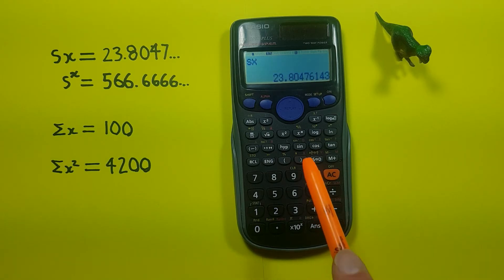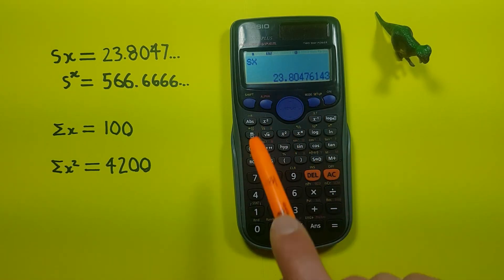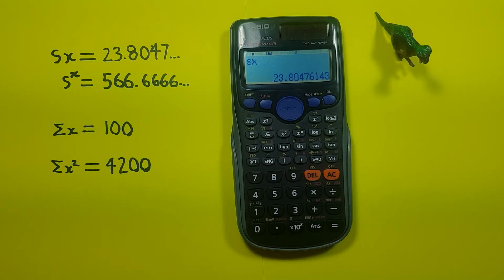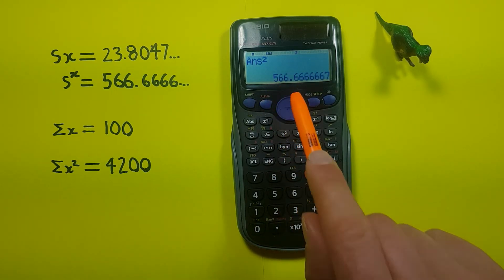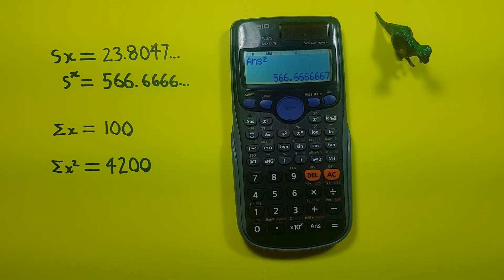So we press 4 and equals, and here we see we get 23.8047, etc. And again, we can get our sample variance by squaring this number and pressing equals, and we see we get a sample variance of 566.6666, etc.